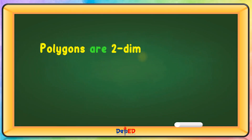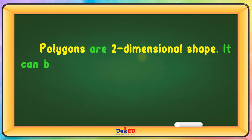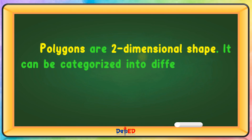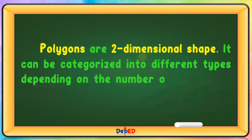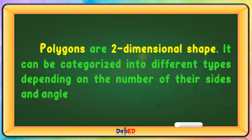Polygons are two-dimensional shapes. They can be categorized into different types depending on the number of their sides and angles.